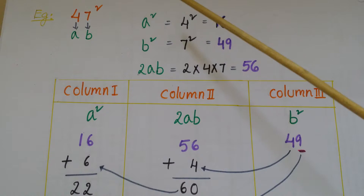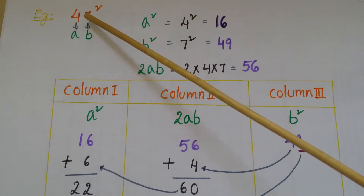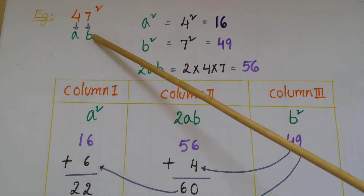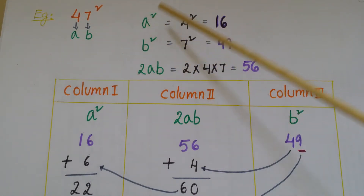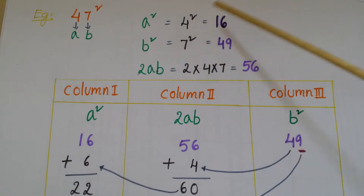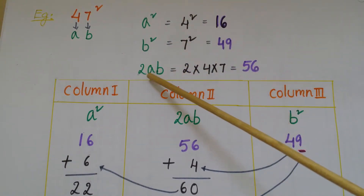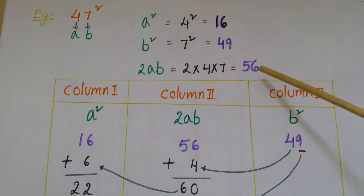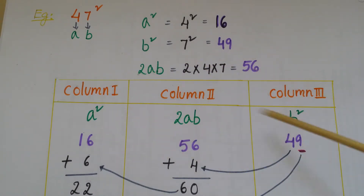Here we want to find the square of 47. So 7 is the units digit and 4 is the tens digit, so a = 4 and b = 7. Calculate the values: a² = 4² = 16, b² = 7² = 49, and 2ab = 2 × 4 × 7 = 56. In this method you just draw three columns: Column 1, Column 2, and Column 3.